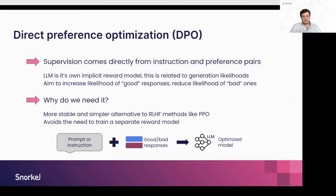DPO — Direct Preference Optimization — came out of Stanford last year. Instead of optimizing a reward model first and then the LLM, the authors asked: why not use preference data to directly optimize the LLM? They found the model has an implicit reward signal based on the likelihood of a response being generated. DPO increases the likelihood of chosen (good) responses and reduces the likelihood of rejected (bad or toxic) responses. Compared to RLHF, this method is more stable, simpler, and avoids the need to train a separate reward model.